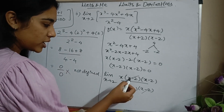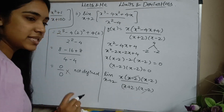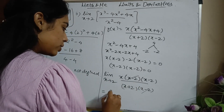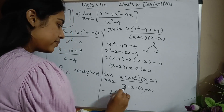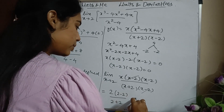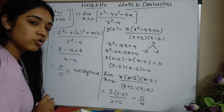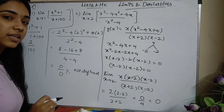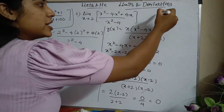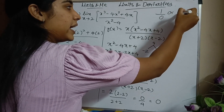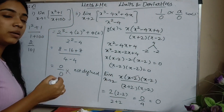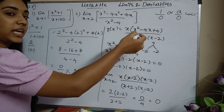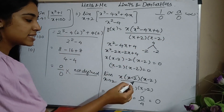The (x-2) factor was causing the 0/0. After cancelling, substituting x = 2 gives 2 times (2-2) divided by (2+2) = 2 × 0 / 4 = 0/4 = 0. The denominator is no longer 0, so 0 in the numerator is fine. Numerator being 0 is okay, but denominator being 0 is not. Whenever you get 0/0, you must cancel the term causing it.